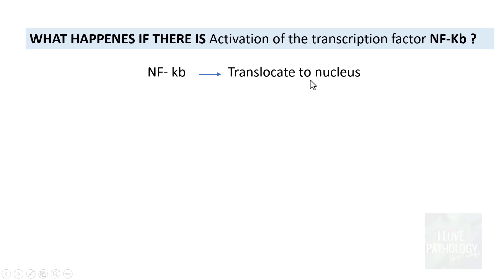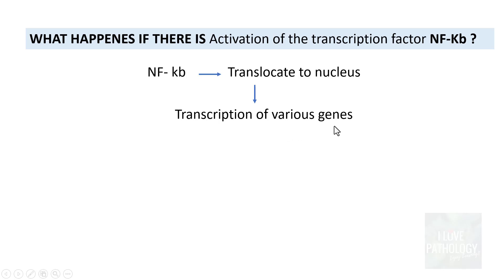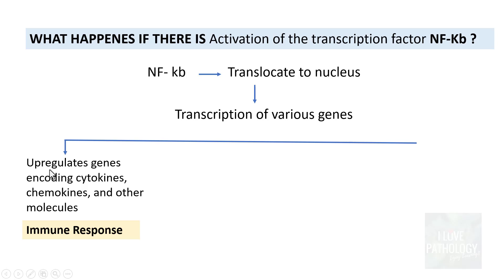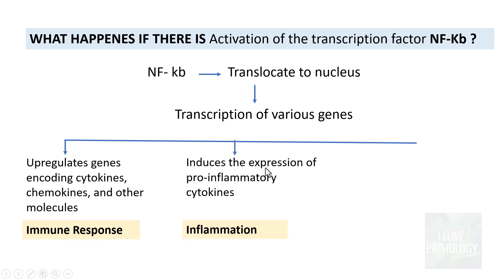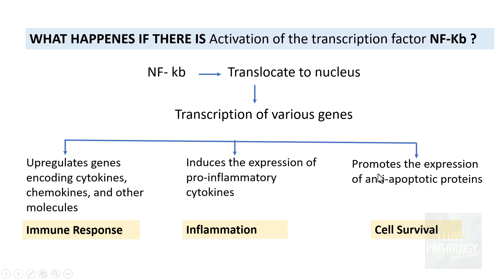Once activated, NF-κB translocates from the cytoplasm into the nucleus of the Reed-Sternberg cells, resulting in transcription of various genes. The outcomes are: first, upregulation of genes encoding cytokines, chemokines and other molecules, driving immune response; second, induction of pro-inflammatory cytokines, causing the inflammatory background; and third, promotion of anti-apoptotic proteins, which is critical for Reed-Sternberg cell survival.